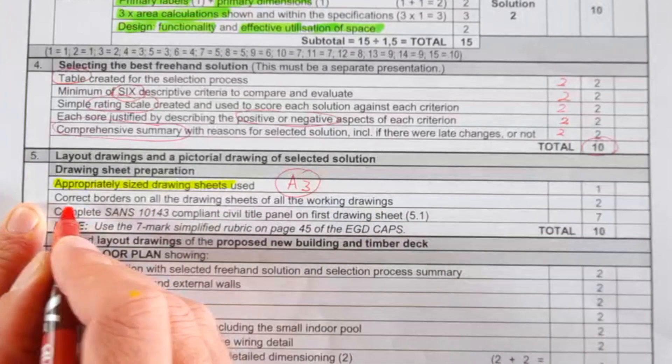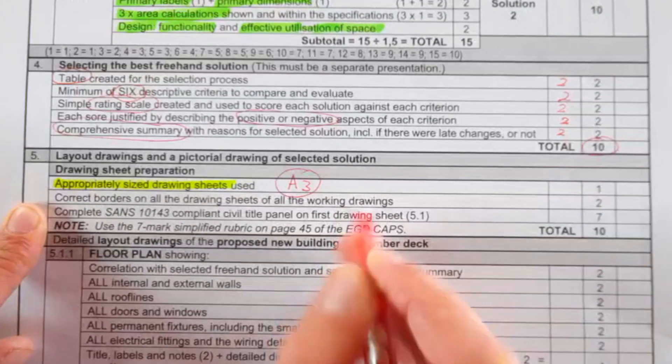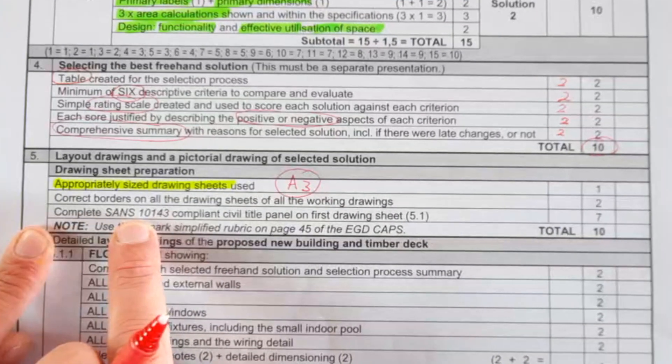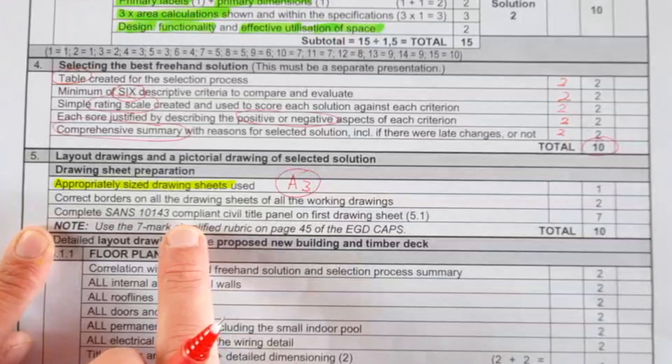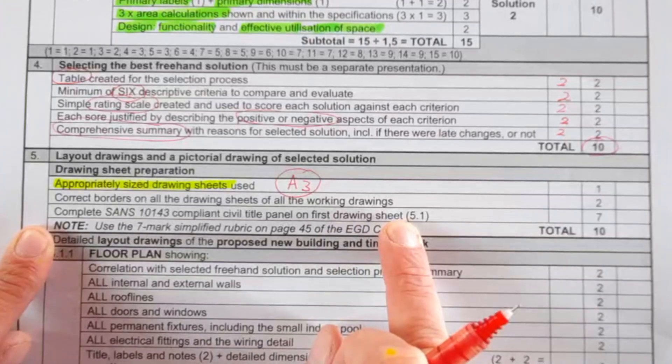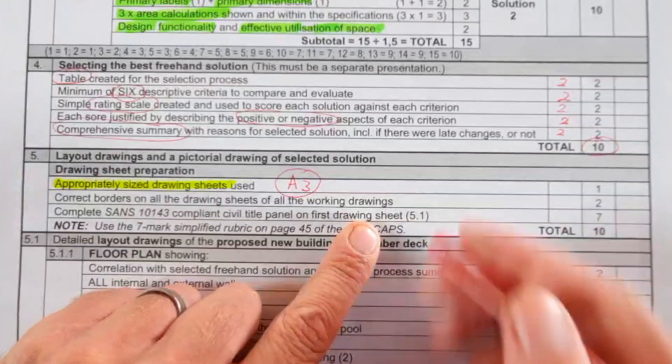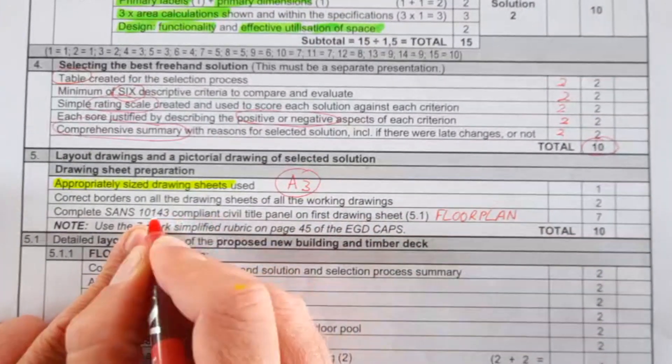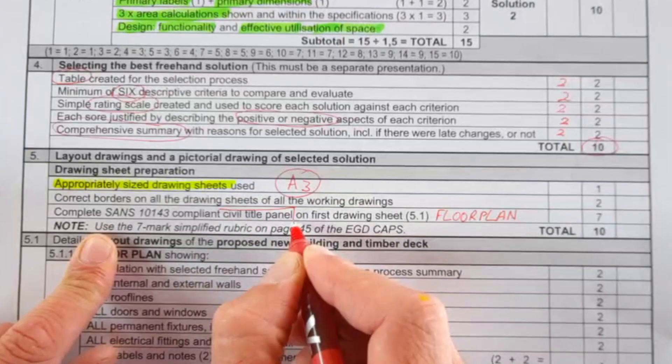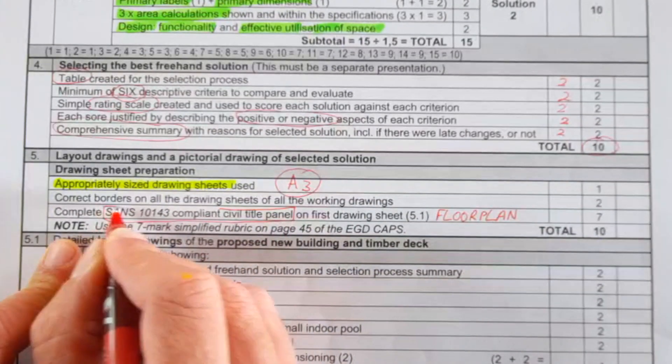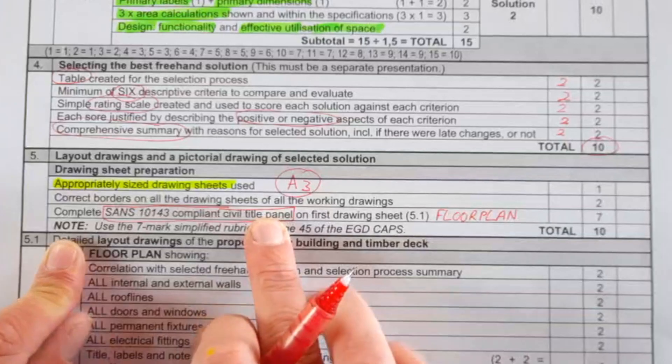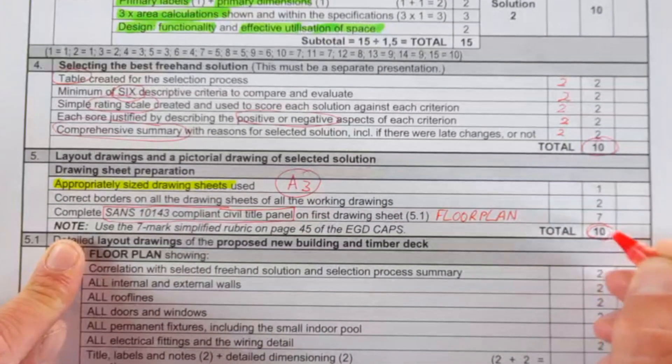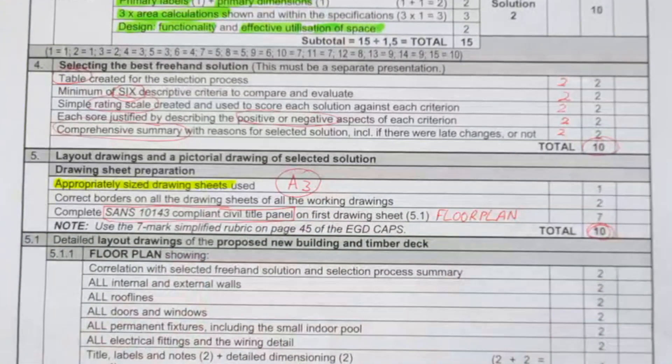Then you have to complete the SABS 10143 compliant civil title panel on the first drawing sheet. So the first drawing sheet, that's your floor plan, must have a SABS compliant civil title panel, and I'm going to show you examples and do an in-depth discussion of this in this video. All of this is a total for you to get 10 out of 10.